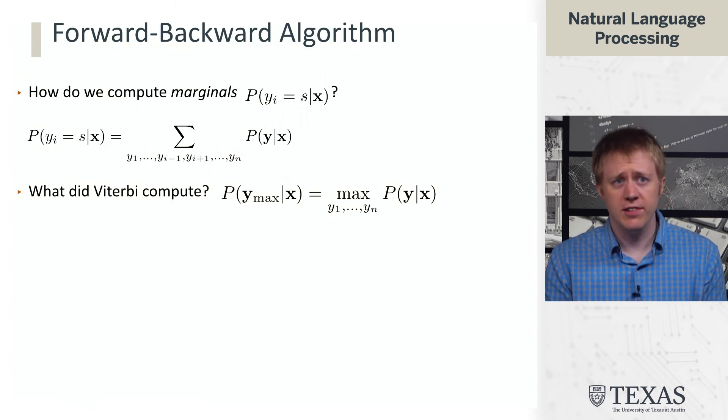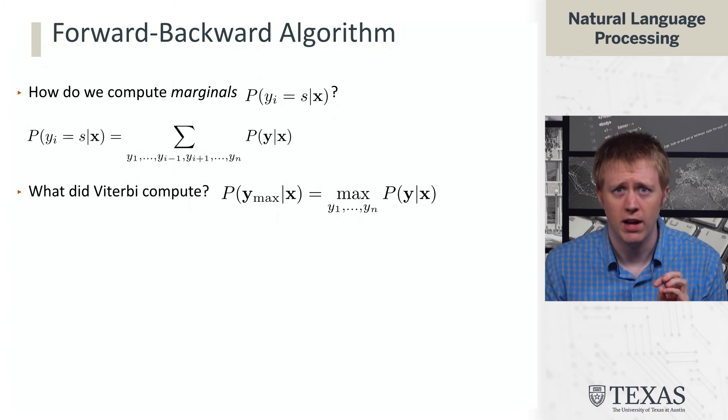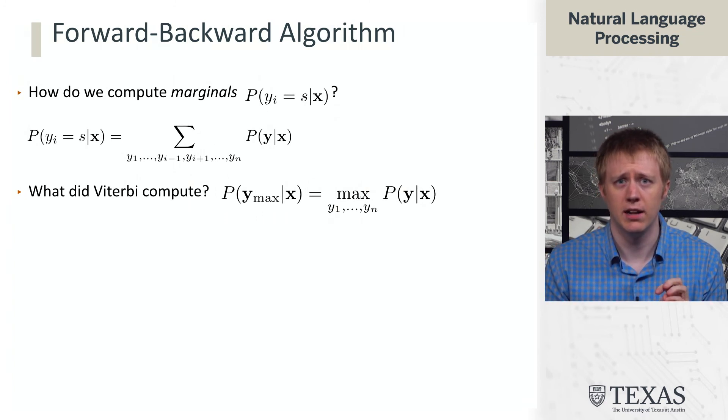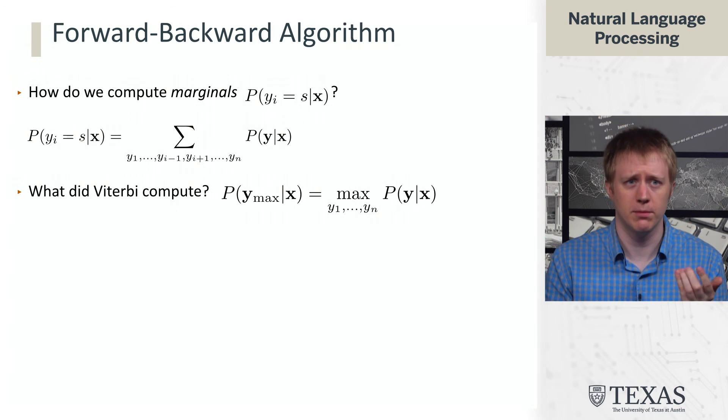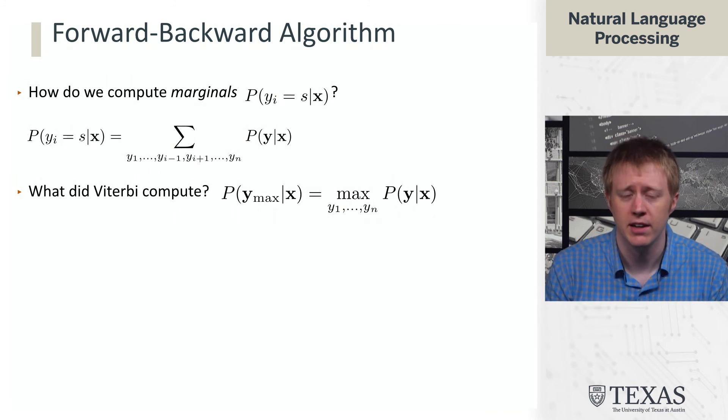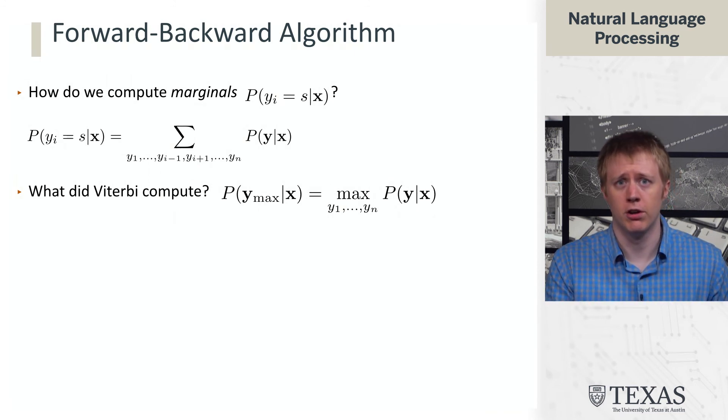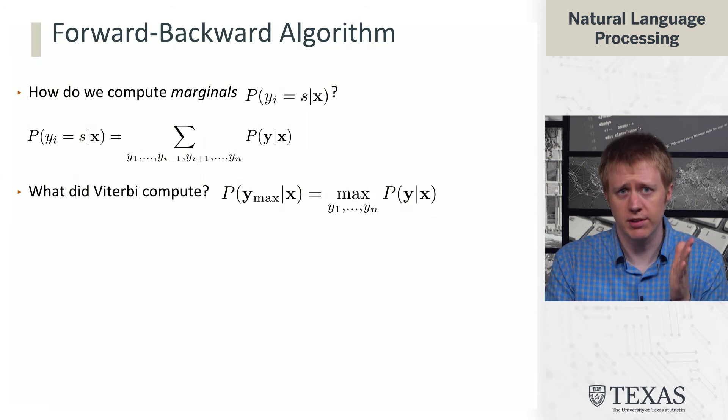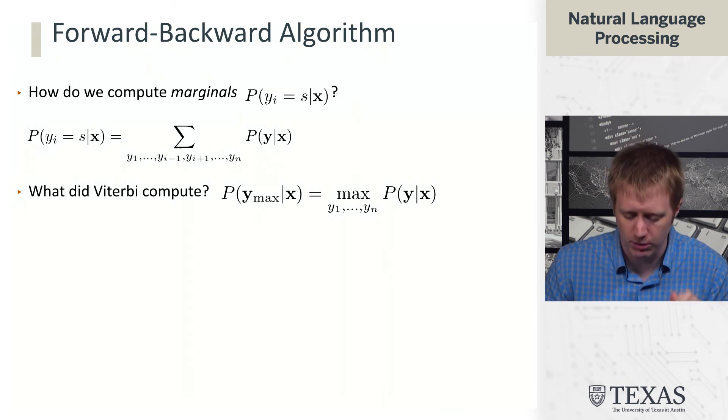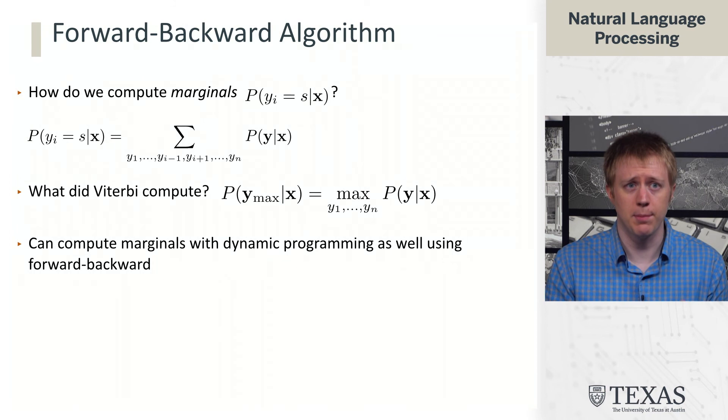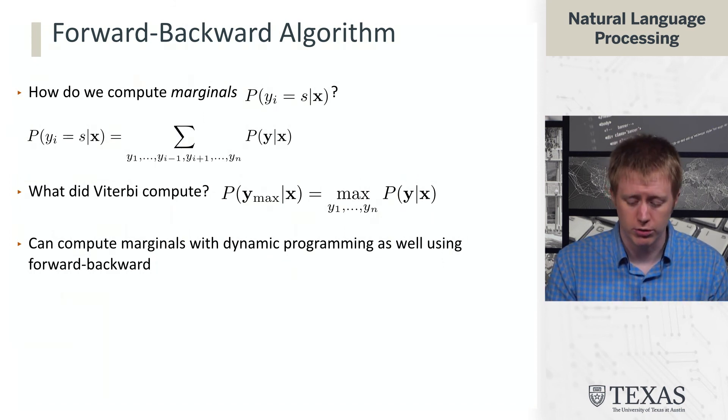So the nice thing is that it's going to look not so different from Viterbi. What Viterbi did was it allowed us to compute the best sequence Ymax by maxing over Y1 through Yn. So here we're doing something a little bit different. We're summing out things instead of maxing, and we're summing out most of those but leaving one in the middle. But the same ideas about dynamic programming are going to apply here.